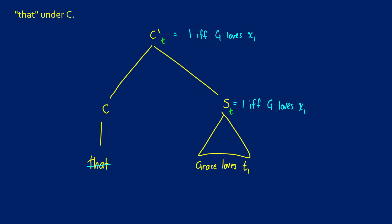So what is "that" going to do? When we say "that Grace loves," we're not really doing anything to the truth conditions. So if we think about the sentence in the C bar, these can both be true if "Grace loves X1," the trace, whoever that is at this point.